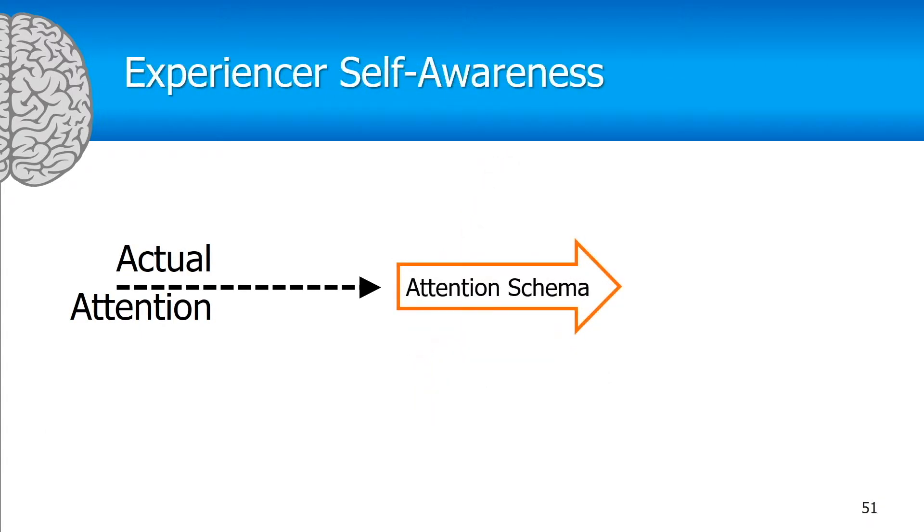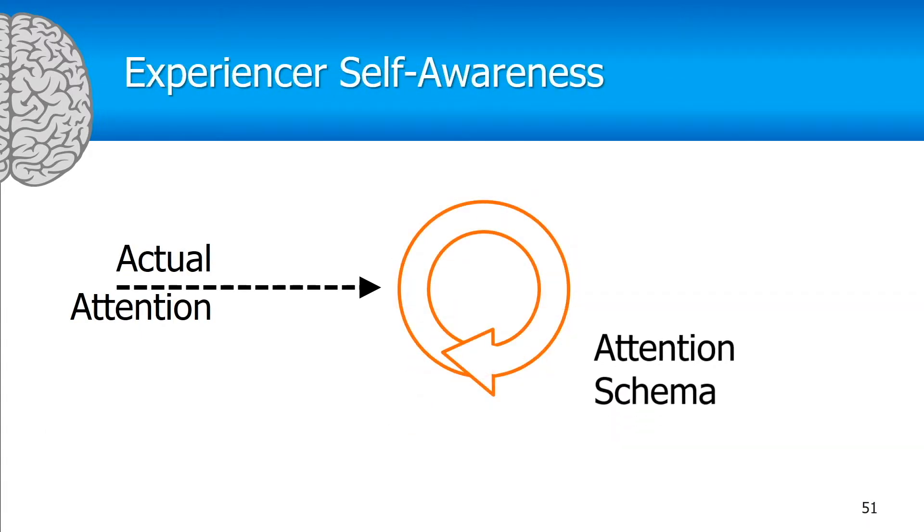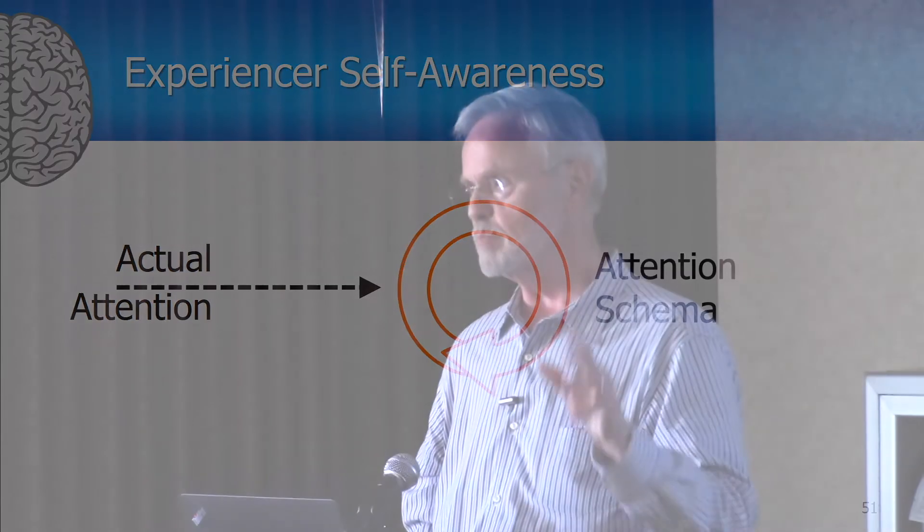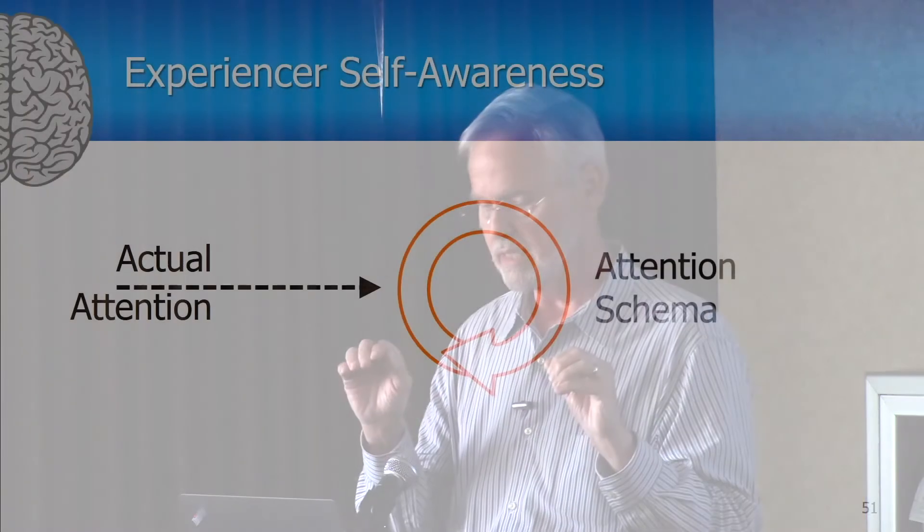For the experiencer, the self-model is the attention schema. When you add the loop, you end up with one big loop of attention schema pointing to itself. This is very unusual — you have a completely abstract concept now just pointing to itself, not pointing to anything else in the conceptual world. Most concepts have a dense web of connections to other concepts, but this self-model exists all on its own. It definitely exists — every time you try to direct your attention to it, you see that it exists — and yet it does not have a location in space. So maybe this is what religions are talking about when they talk about the soul: this loop of attention schema, a loop of awareness of awareness.